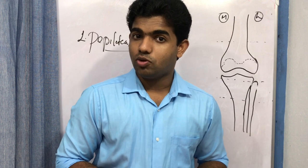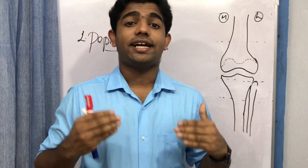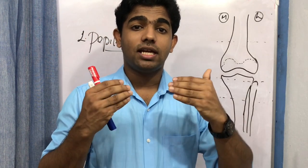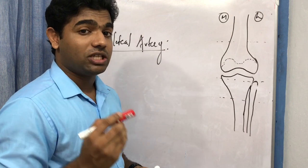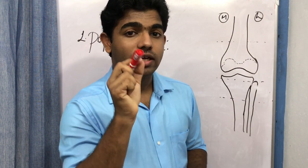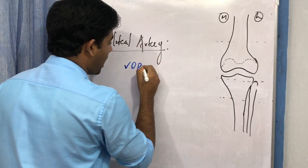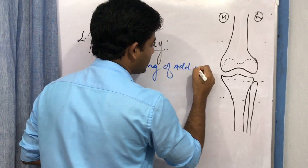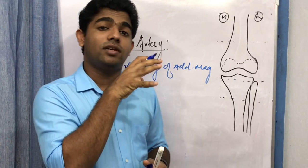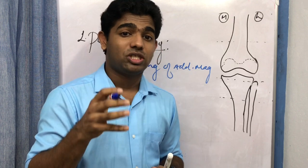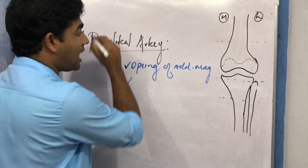The popliteal artery is the continuation of the femoral artery at the adductor hiatus — the opening in the adductor magnus. This is the first key point. The popliteal artery is also the deepest content of the popliteal fossa, deeper than the tibial nerve and common peroneal nerve.